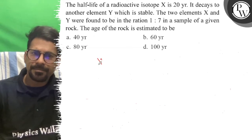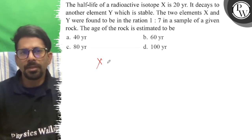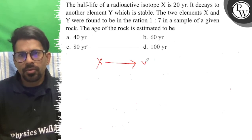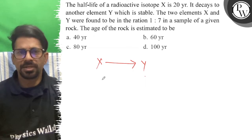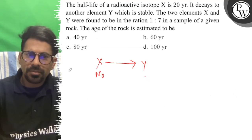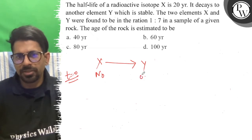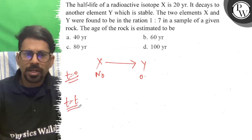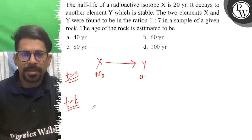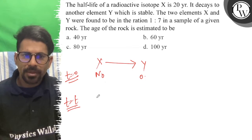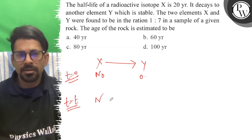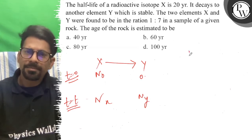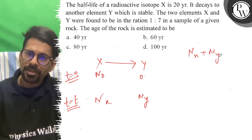So we have X, which is radioactive, and Y is stable. So when it was t equal to 0, Y was 0. When we took a sample, we found that there are N atoms — this is Nx and this is Ny. But the fact is that Nx plus Ny equals N0.